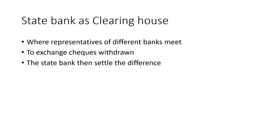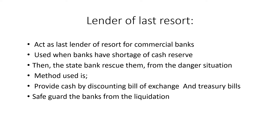Another function of the central bank is acting as a lender of last resort to different commercial banks. This facility is used when banks have a shortage of cash reserves. In such cases, the State Bank comes to their rescue, because a shortage of cash is a very dangerous situation. The main method used by commercial banks to get credit from the State Bank is applying for a rediscounting facility on bills of exchange and treasury bills. This safeguards banks from liquidation by helping them fulfill their reserve requirements.